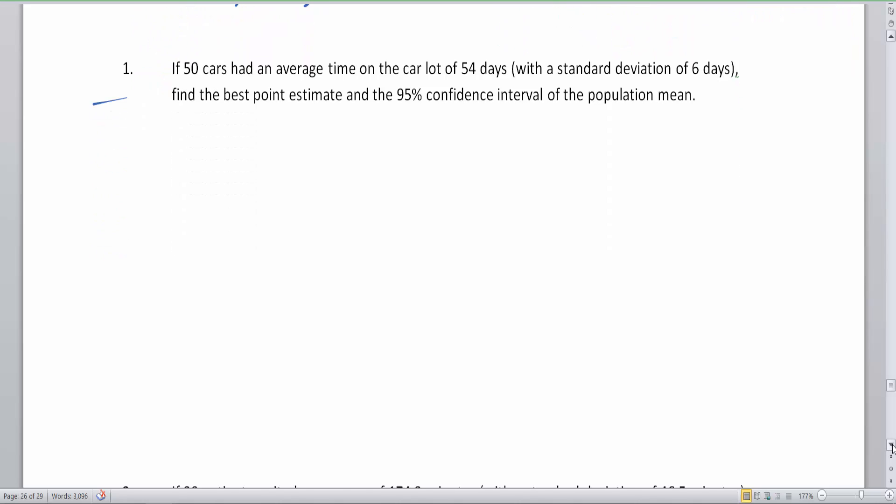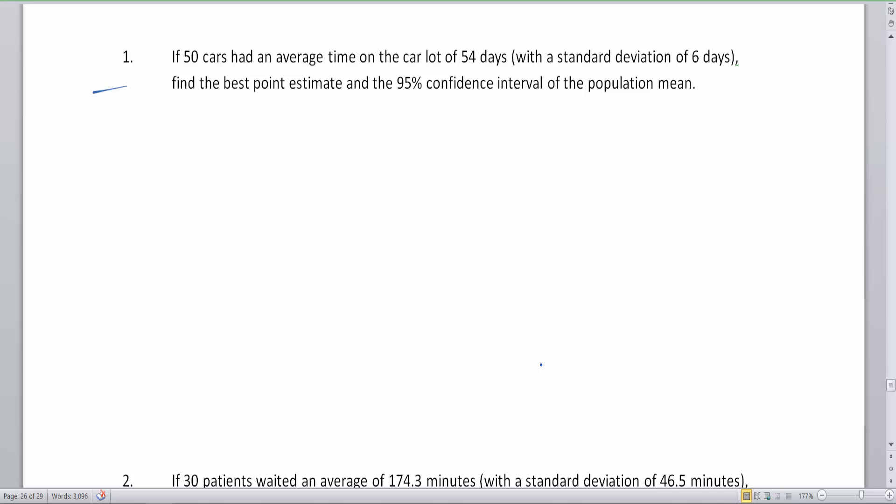So let us play a game of cars on a parking lot. Now to the left of here, I'm going to write down a ton of statistics. And some of that statistics might be needed for your paper, pencil homework. So let's get in the habit of grinding out all of the good data that we can read in a story problem. If 50 cars, okay, so that right away is our N. If 50 cars had an average time on the car lot of 54 days. Okay. So this is our point estimate, which is our average of the sample with a standard deviation of six days. That is our standard deviation. Find the best point estimate and the 95% confidence interval of the population mean.